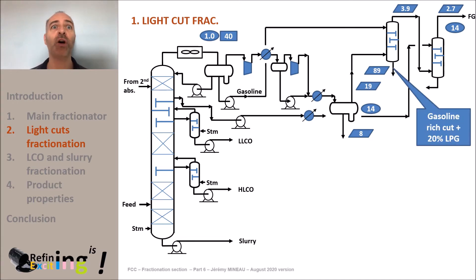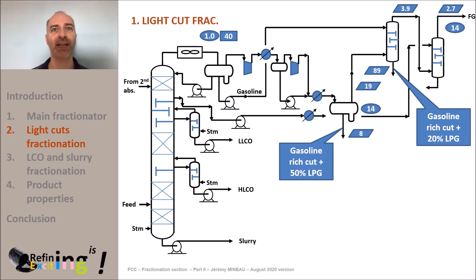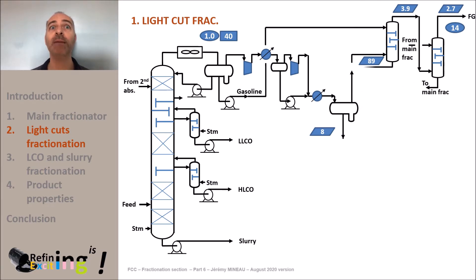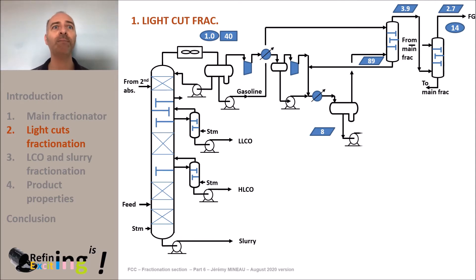These two streams also contain fuel gas molecules — about a few weight percent of C1 plus C2. The first step consists in mixing these two liquid streams, then the mixture is routed to a stripper to remove the last molecules of fuel gas and H2S.